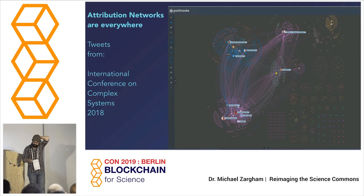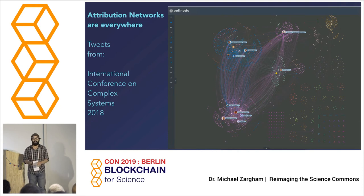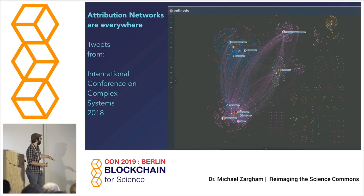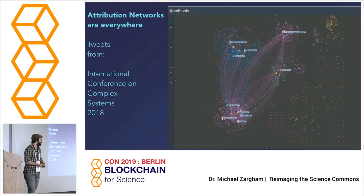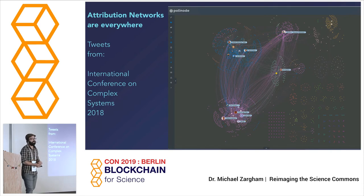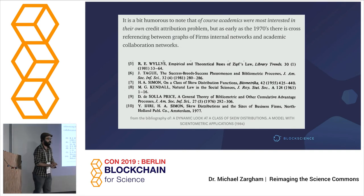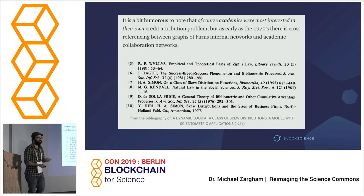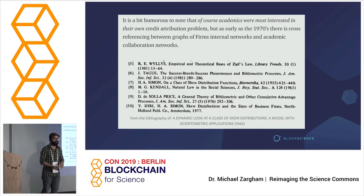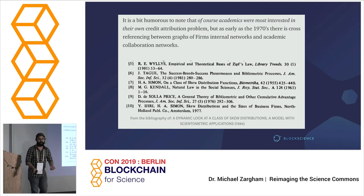I'm going to jump to the idea of the attribution network and use a Twitter graph pulled from a conference I spoke at last year. During the conference, people were snapping photos of each other's talks and tweeting about them, giving us a snapshot of a mini attribution network at the complex systems conference. I'm going to take this idea beyond the toy example of Twitter and start thinking about it in terms of actual academic research. Academics have been talking about the academic process for as long as we care to look back — here's a paper from around 1984 with citations as far back as the 70s referring to bibliometrics and who's citing whom under what conditions, a precursor to the impact factor we have now.